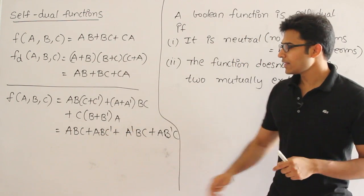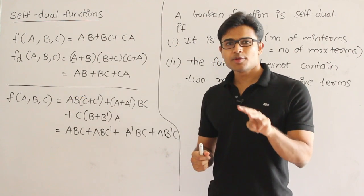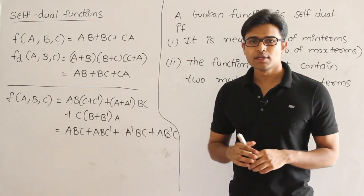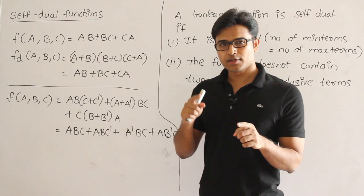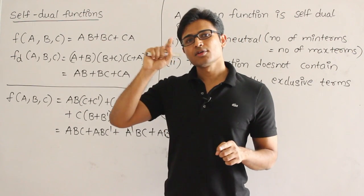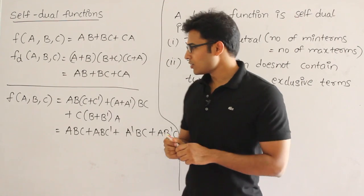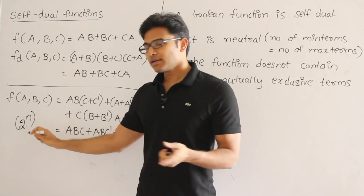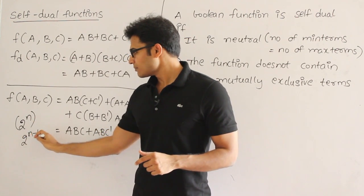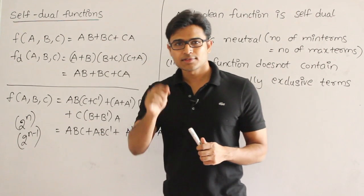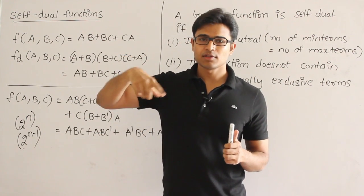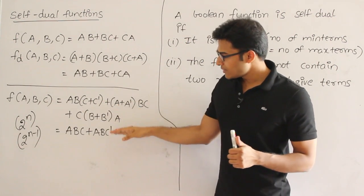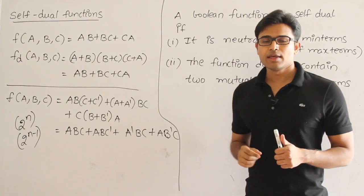Now observe this. In three variables, how many minterms are possible? Eight minterms. But how many minterms are here? Four minterms. So whenever you have any function with number of minterms equal to 2 power n minus 1. The total number of minterms possible is 2 power n. And if any function contains the number of minterms 2 power n minus 1, it means that we have taken half of the combinations and for them we have assigned 1, and for the remaining half we have assigned 0. So that is nothing but a neutral function. Therefore, it is a neutral function. First thing.